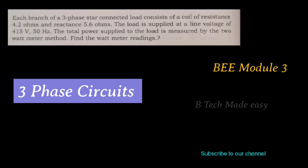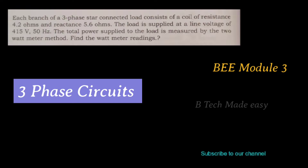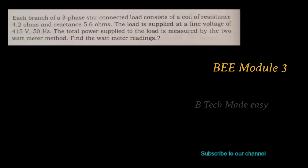Each branch of a three-phase star-connected load consists of a coil of resistance 4.2 ohm and reactance 5.6 ohm. The load is supplied at a line voltage of 415 volts, 50 Hz. The total power consumed by the load is measured by the two wattmeter method. Find the wattmeter readings.